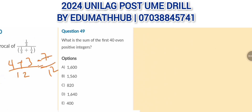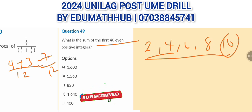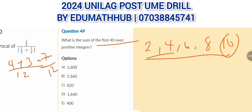The next question asks for the sum of the first 40 even positive integers: 2, 4, 6, and so on. Since you need 40 even numbers, they will end at 80 — because stopping at 10 gives you 5 even numbers, so stopping at 80 gives you 40. The number of terms is 40 and the last term is 80.